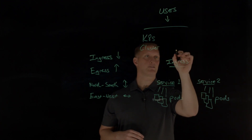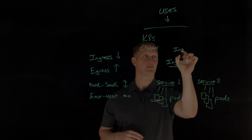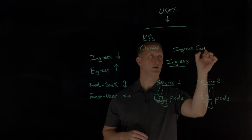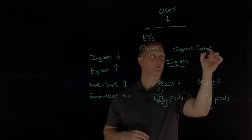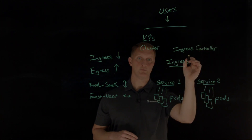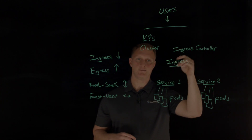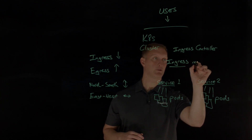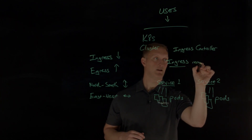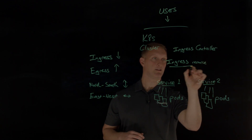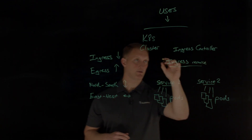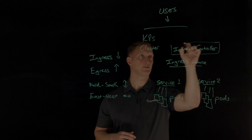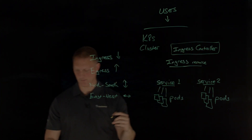But on its own, the ingress resource doesn't really do anything — there's no action, it's just the definition of all those things. So you have to deploy and configure what's called an ingress controller application to implement the rules defined in the ingress resource. The ingress controller sits right here on the edge of the cluster.